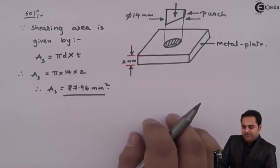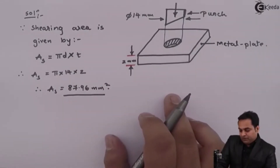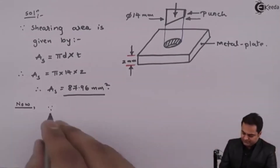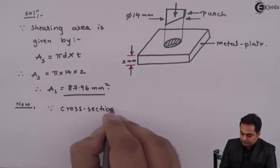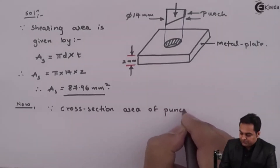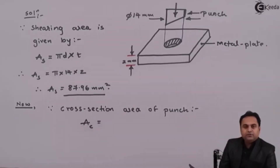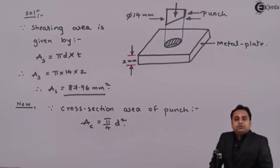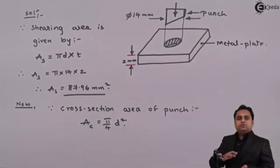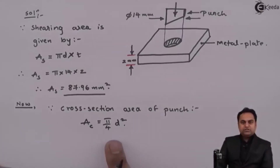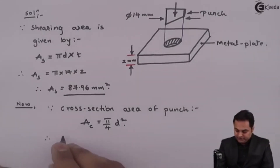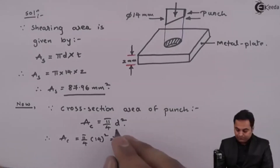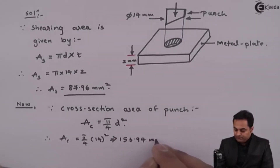After getting the shearing area, I have to find how much area is compressed. The cross-sectional area of the punch, A_c, equals π/4 × D². Since the punch is subjected to compression, we use the cross-sectional area. Therefore A_c = π/4 × 14², which comes out to be 153.94 mm².